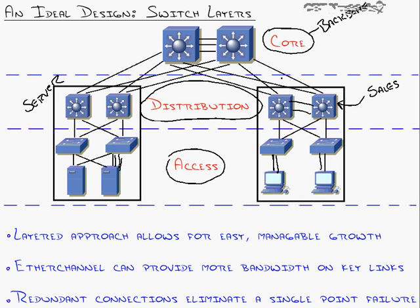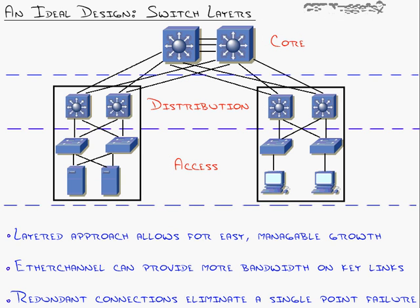Think of this as a campus model — a literal college campus where you have the College of Business over here, the College of Art over here, and all the different colleges tying back to the backbone of the entire campus network, which is the core. Everything goes through the core, and other buildings branch off with modules. That's the idea of designing a network in a layered approach with modules.